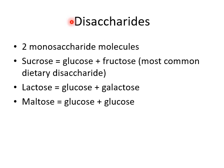Then we have our disaccharides — two monosaccharide molecules joined together. We have sucrose, which is glucose plus fructose joined together to make table sugar, and it's the most common dietary disaccharide. We have lactose, which is glucose and galactose joined together and found in milk. And we have maltose, which is glucose and glucose joined together.